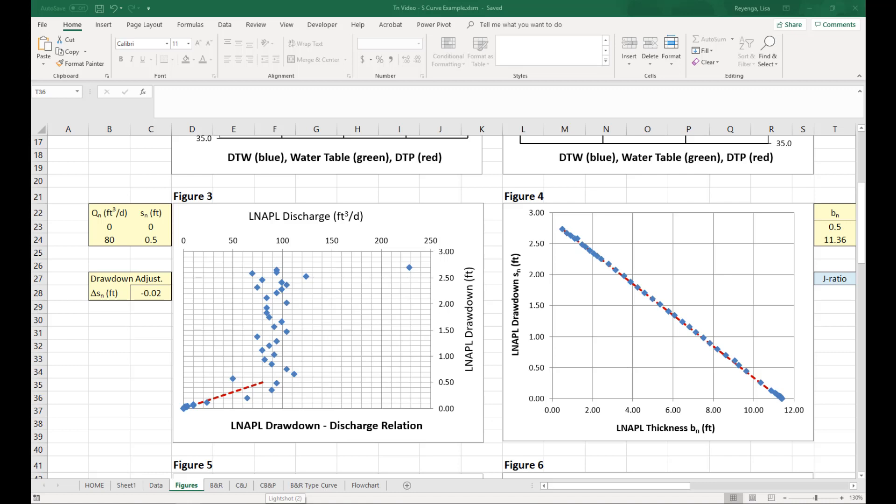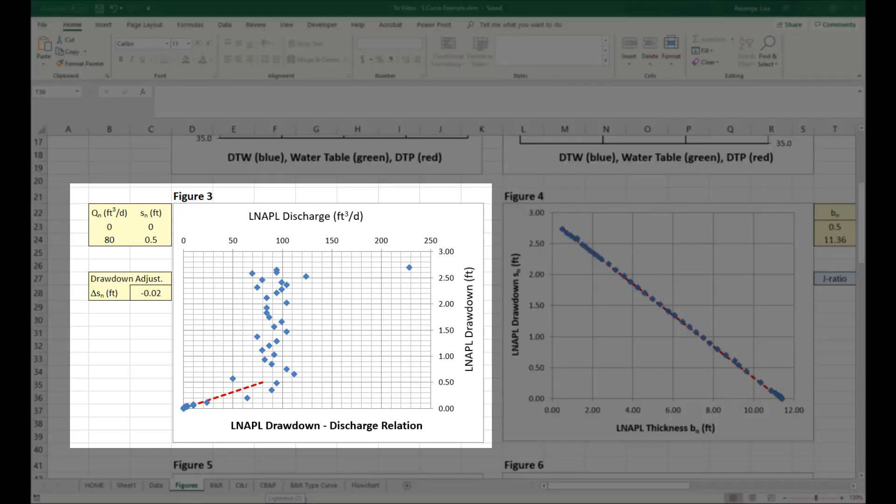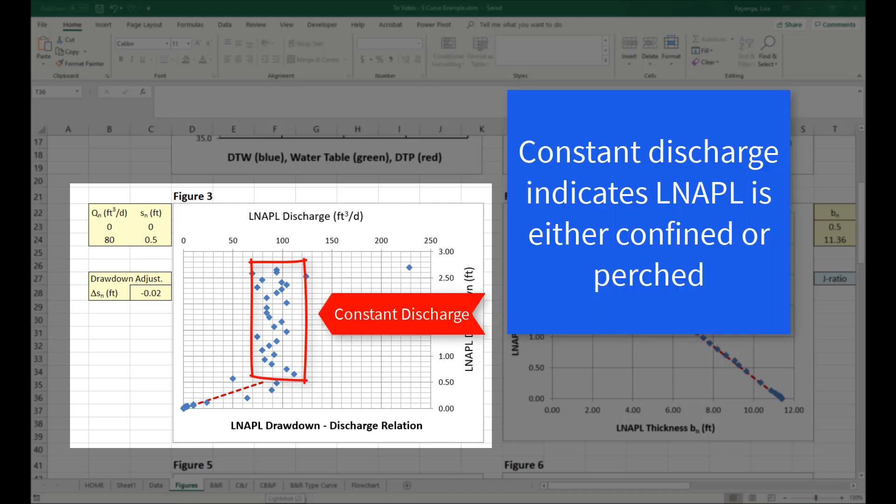While multiple methods exist for identifying these conditions, confined or perched conditions can be identified from bail-down test data by reviewing the DVD in Figure 3 for periods of constant discharge. Constant discharge indicates that the LNAPL is either confined or perched.